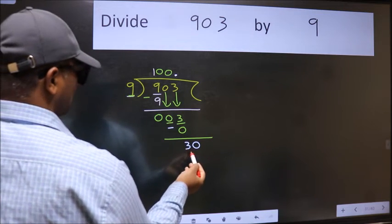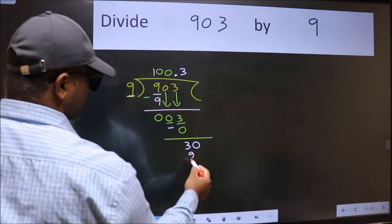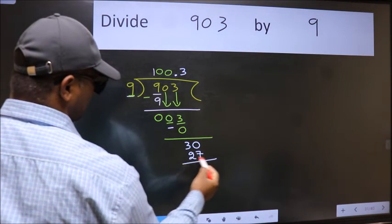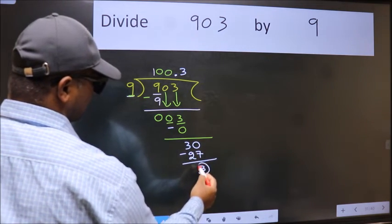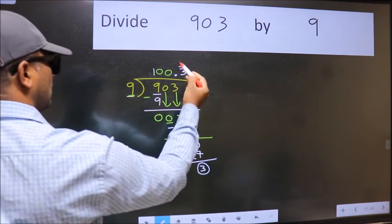So 30. A number close to 30 in 9 table is 9 times 3 is 27. Now we subtract we got 3 again. That means we get bar on this number.